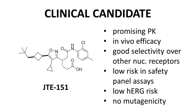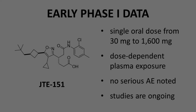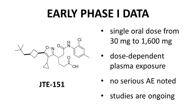Based on these results, compound 10 with research designation JTE-151 was considered a clinical candidate. In addition to promising PK and in vivo efficacy, JTE-151 had good selectivity for ROR gamma over other nuclear receptors, low activity in standard safety panel assays, low hERG channel activity, and no mutagenicity. The drug annotation article discloses early Phase 1 PK data: with oral dosing from 30 mg to 1600 mg, JTE-151 showed dose-dependent plasma exposures and no serious adverse events. The studies are ongoing, and the compound may be in clinical trials in Japan.